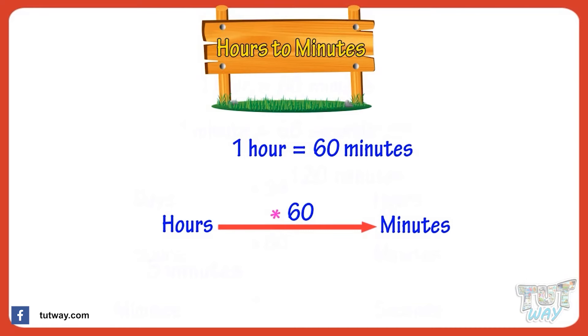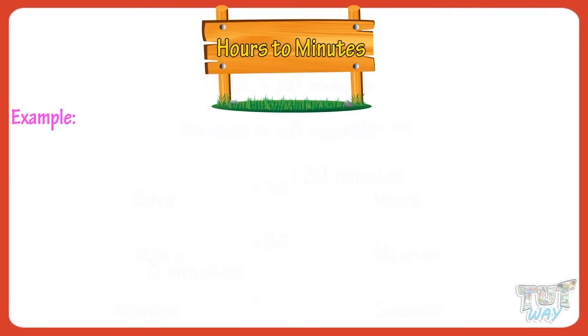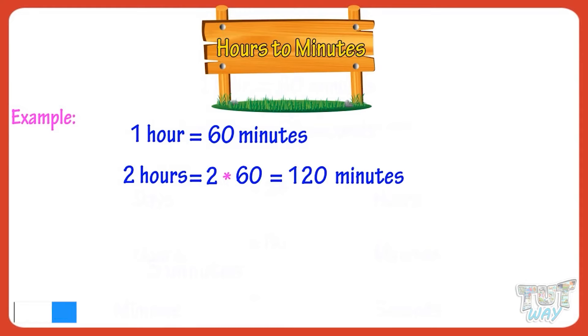Let's see some examples. One hour equals 60 minutes. So two hours will be multiplied with 60. Two hours equals 2 multiplied by 60 equals 120 minutes.